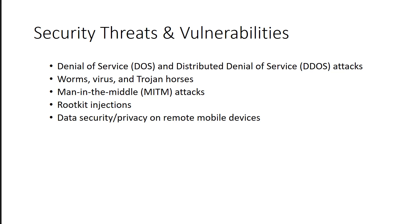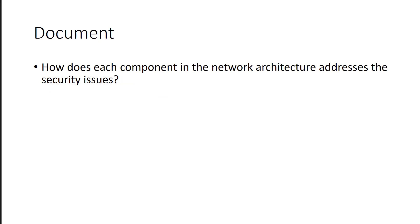You're going to be looking at security threats and vulnerabilities — things like DoS and DDoS attacks, malware like worms, viruses, Trojans, man-in-the-middle, and rootkits. You're also going to discuss data security and privacy for remote devices. Keep in mind, this will be a section of your paper, and you need to document how these threats and vulnerabilities are mitigated or transferred — how are you dealing with the risk of them in your overall network?